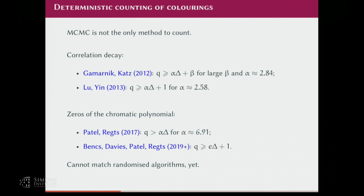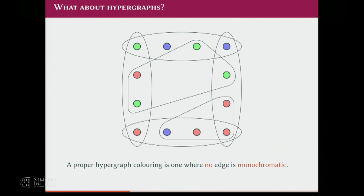So that's pretty much what we know about counting colorings. We have some hardness, we have some algorithmic results, but they are not quite the same yet — they're on the same order, we just can't pin down the best constant yet.